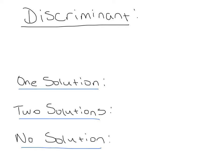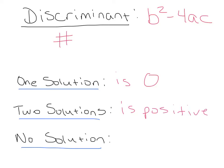One piece of information you have to learn first is called the discriminant. The discriminant is the b squared minus 4ac part — in other words, it's the part underneath the square root sign, or the radical. When you calculate b squared minus 4ac and actually get a number, it's going to tell you whether you have one solution, two solutions, or no solution. It's one solution if the discriminant is zero, two solutions if it's a positive number, and no solution if it's negative. Add that into your notes.